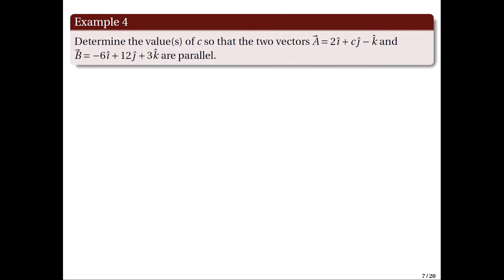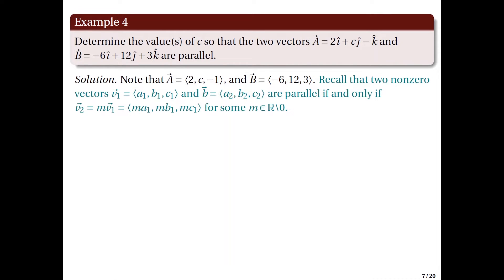For the fourth example, we determine the value or values of constant C so that vectors A and B are parallel. Writing the given vectors in coordinate form: vector A = (2, C, −1) and vector B = (−6, 12, 3). Two non-zero vectors are parallel precisely when one can be written as a non-zero scalar multiple of the other.